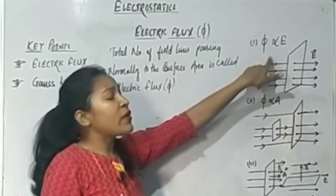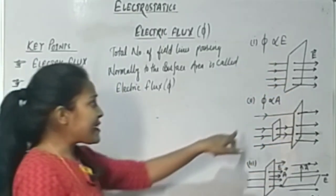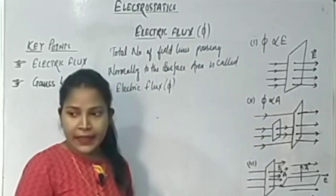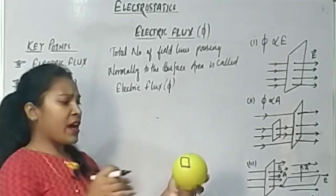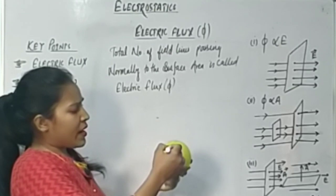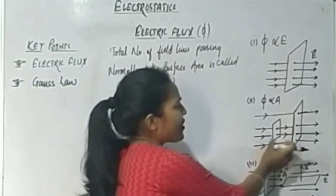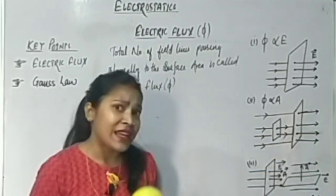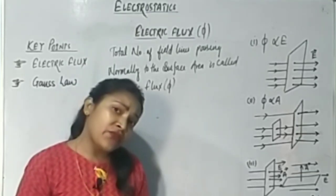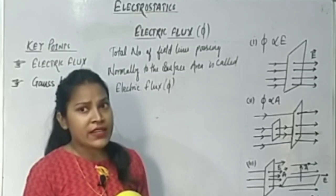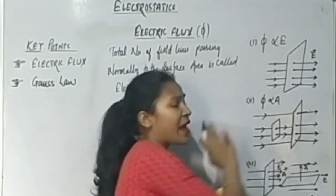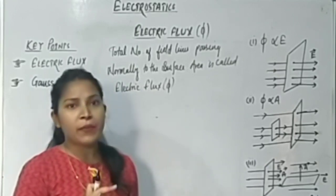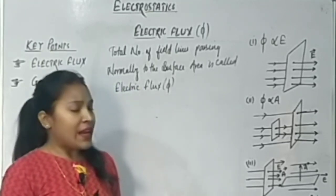The second point is that electric flux depends on the area of cross section. If we have the same charge and a small area, fewer field lines pass through. If we increase the area, obviously more electric field lines pass through, and the electric flux increases. Smaller the area, smaller the electric flux; larger the area, larger the electric flux.